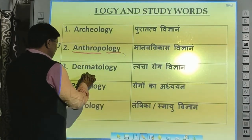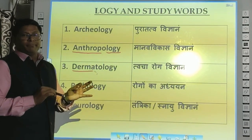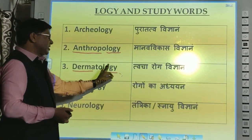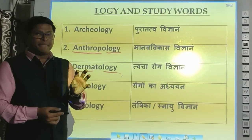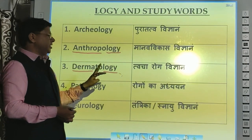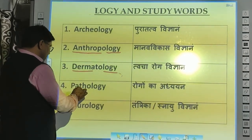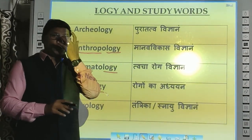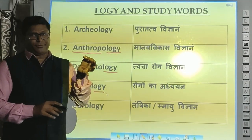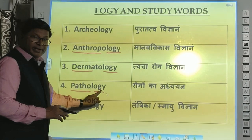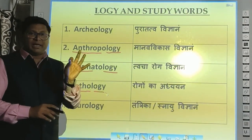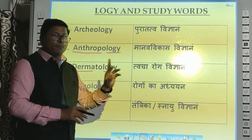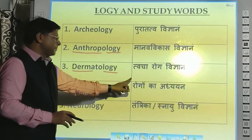Next is Dermatology — the branch of medicine dealing with skin and its disorders. That is called Dermatology. Next is Pathology: 'patho' plus 'logy.' Pathology is that branch of medicine where we do laboratory examinations — रोगों का अध्ययन — the study of diseases through laboratory examination, that branch is called Pathology.